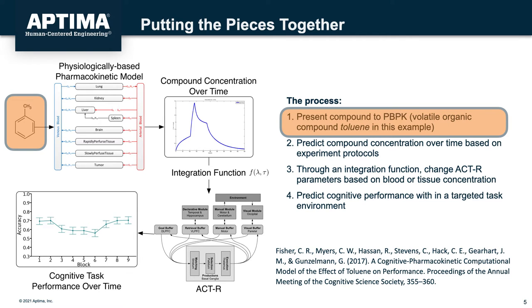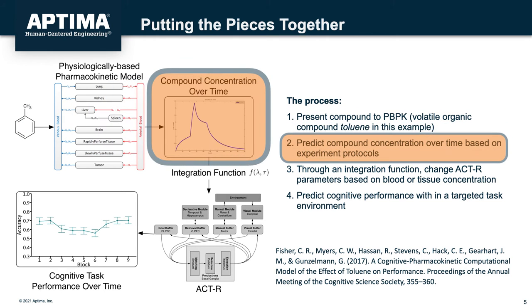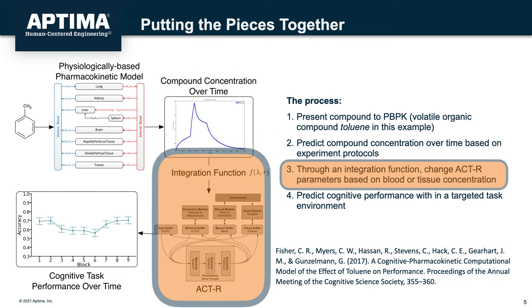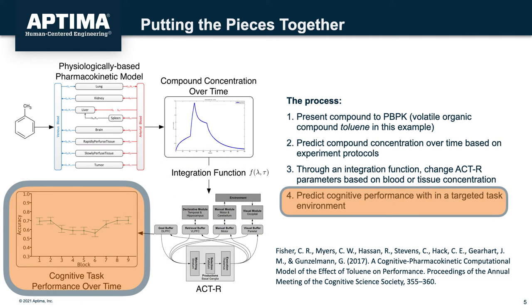First, we present the compound of interest to the PBPK model in accordance with the protocol, timing, and dose of exposures for which we are making predictions. This produces a prediction of compound concentration over time. These predictions are used to scale parameters in ACT-R. And finally, ACT-R makes predictions of performance where the cognitive processes are affected by the underlying physiology.